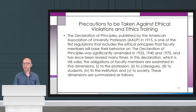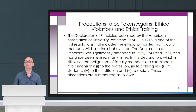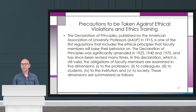In this declaration, which is still valid, the obligations of faculty members are examined in five dimensions: the first is to the profession, the second is to colleagues, the third is to students, the fourth is to the institution, and the last is to society.